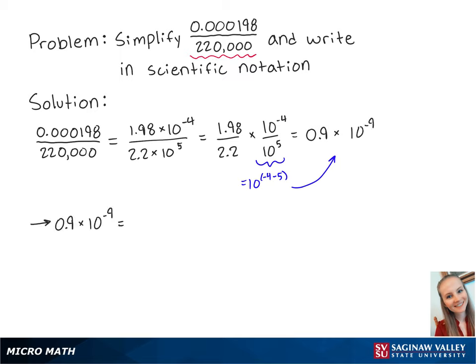We need to write this in scientific notation, which means we need to move the decimal to the right one time. So this equals 9 times 10 to the negative 1 times 10 to the negative 9.